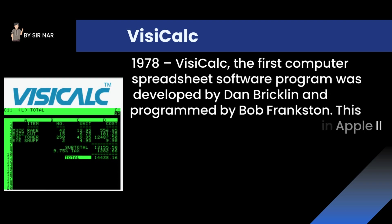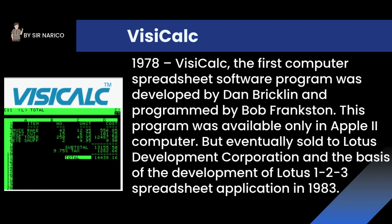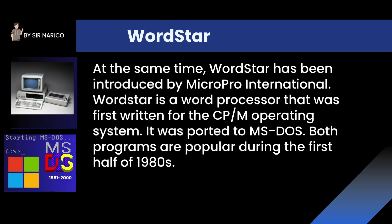In 1978, VisiCalc, the first computer spreadsheet software program, was developed by Dan Bricklin and programmed by Bob Frankston. This program was available only on the Apple II computer, but was eventually sold to Lotus Development Corporation and became the basis for the development of Lotus 1-2-3 spreadsheet application in 1983. At the same time, WordStar was introduced by MicroPro International — a word processor first written for the CP/M operating system and later ported to MS-DOS. Both programs were popular during the first half of the 1980s.